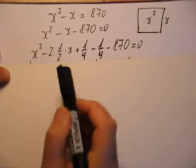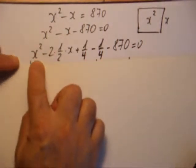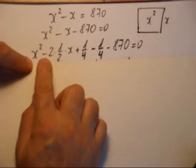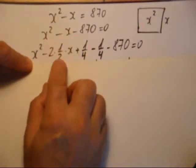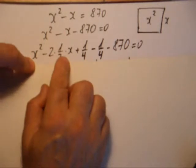Puis, là c'est le mot difficile. X carré moins, à la place de x, je vais écrire 2 fois 1 demi fois x.